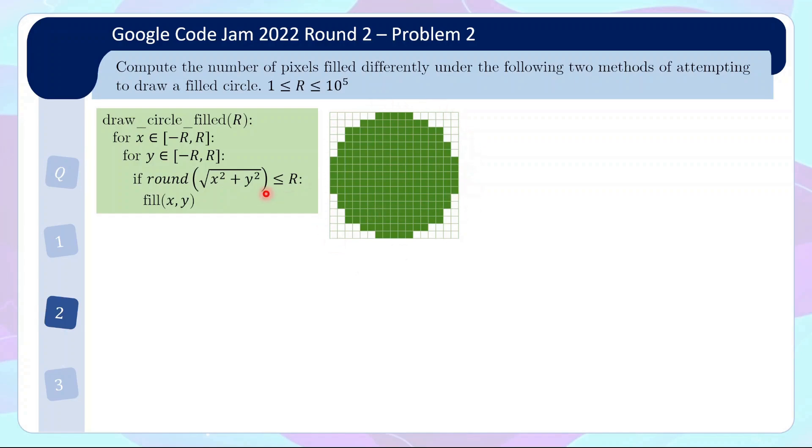The first method which I'll call the green method is basically if you want to draw a filled circle of radius capital R, the method says for x from -R to R and y from -R to R, if the rounded value of sqrt(x^2 + y^2) is less than or equal to R, you will fill x,y.